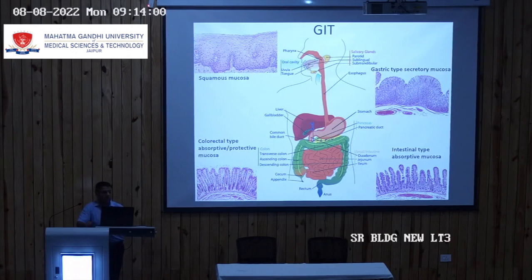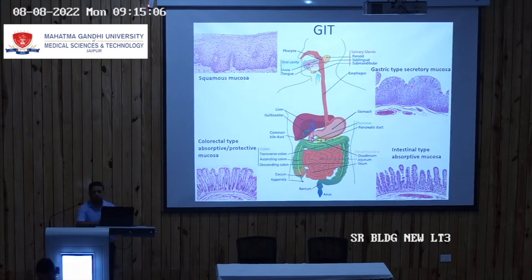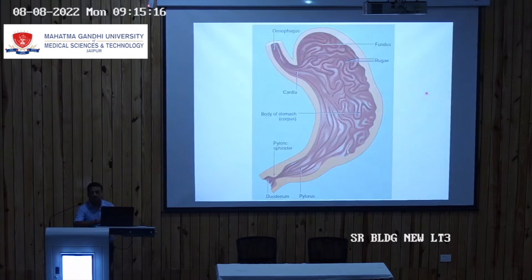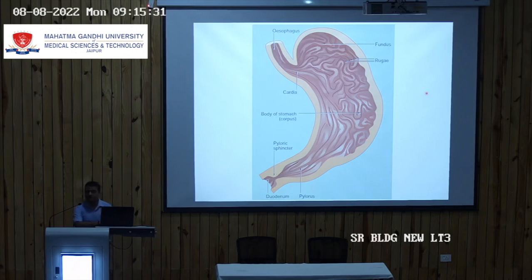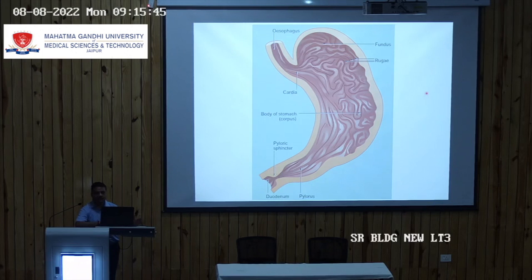We have now come to the second part. Today we will concentrate on gastric secretory mucosa. This is the anatomy of the stomach. The stomach starts where the esophagus ends and opens into the duodenum. In Peptic Ulcer Disease, acid is high in the stomach and can regurgitate into the esophagus, causing GERD.